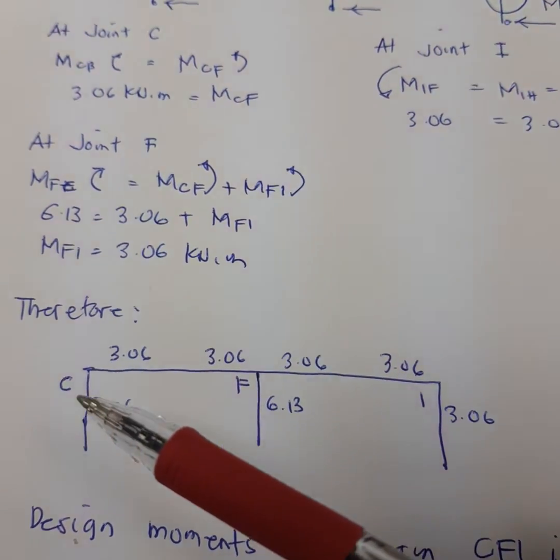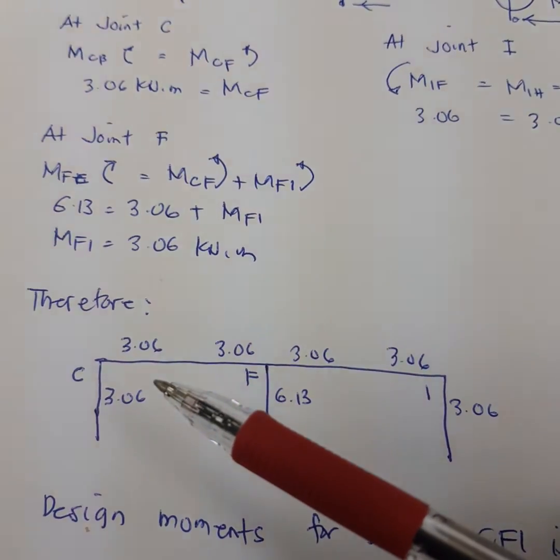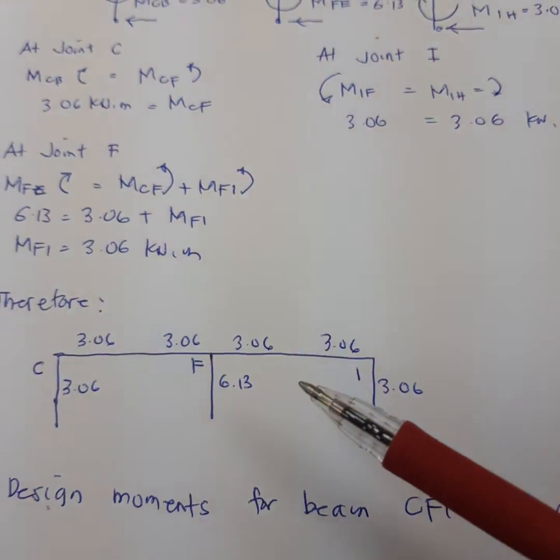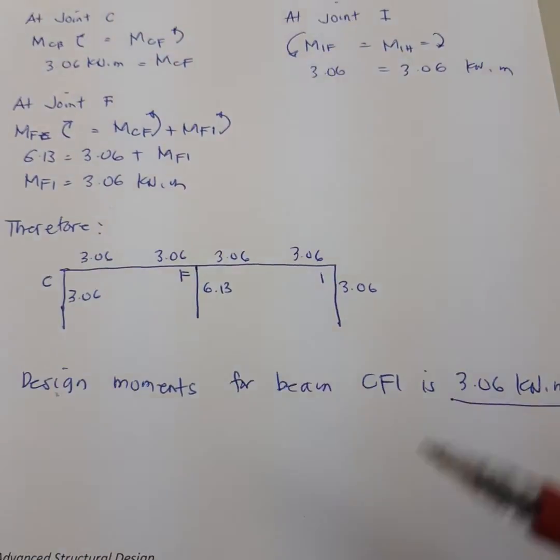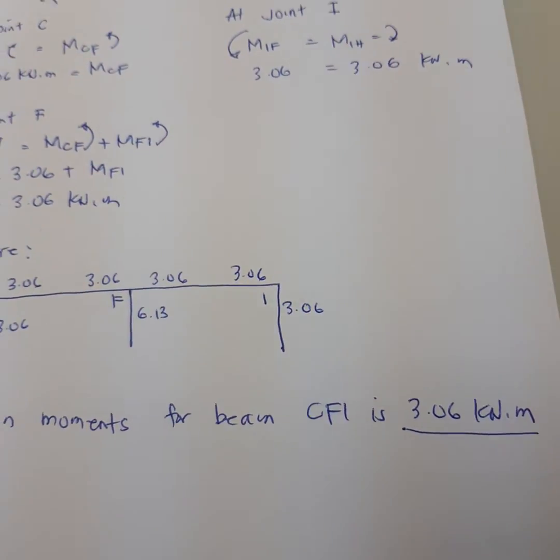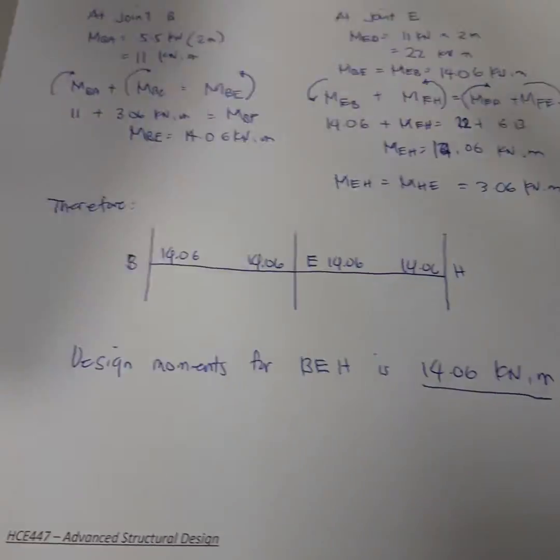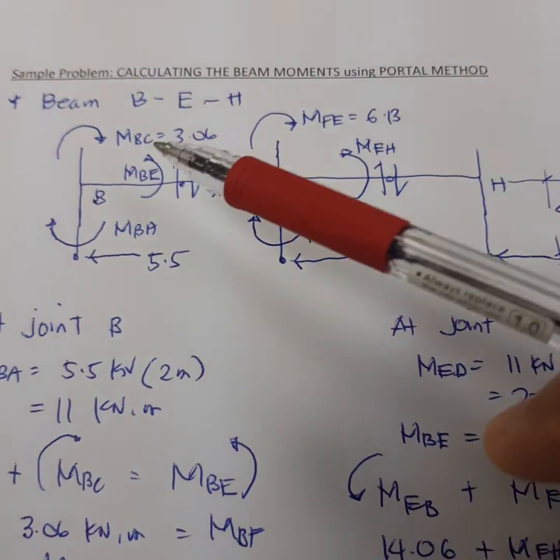The moment that you have computed or the flexure for this beam CFI is 3.06 for beam CF and then 3.06 again for beam FI. So this will be the design moment that you are going to compute for designing the beam considering the wind load. This is just for wind load, meaning you have to compute also for dead load and then for live load.